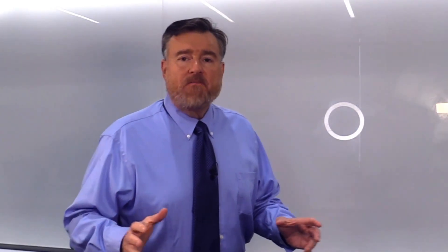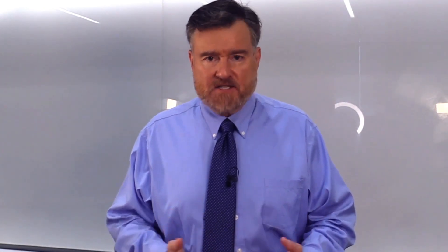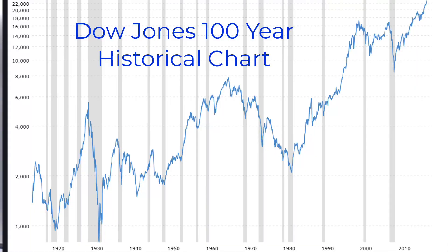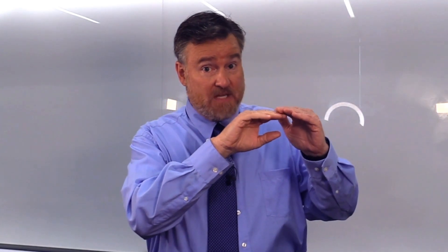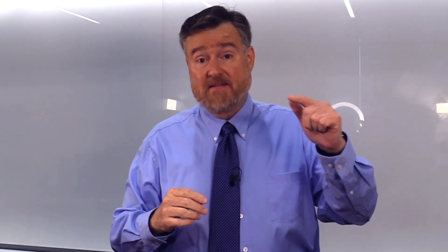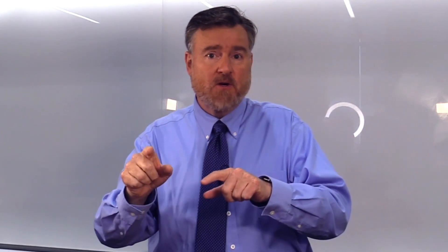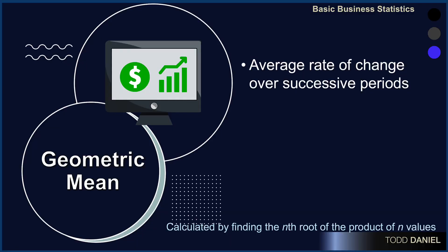A third circumstance in which using a simple mathematical mean will not suffice is when we're looking at investments. We know that there's a typical upswing in the return on investment; however, there are little cycles that occur along the way. If you invest $100 at the top of one of those cycles, you're going to ride it down before it increases. But if you had invested that same $100 at the bottom of the cycle, you would have ridden it all the way up. Your average return could be a function of the time at which you invested. Therefore, if we have a circumstance like that, we will use a geometric mean.